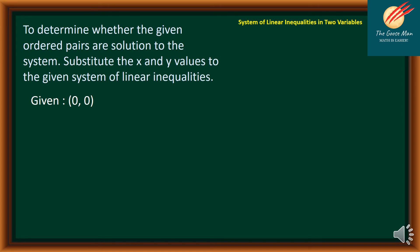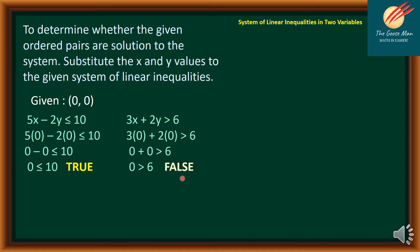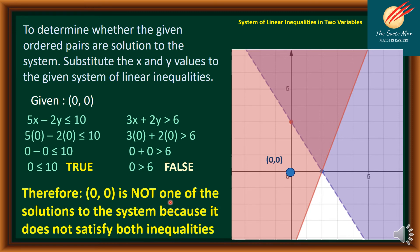Now let's test the point (0, 0). In 5x minus 2y ≤ 10: 5(0) minus 2(0) = 0 ≤ 10 — true. However, in 3x + 2y > 6: 3(0) + 2(0) = 0, and 0 > 6 is a false statement. Therefore, (0, 0) is not one of the solutions to the system because it does not satisfy both inequalities.